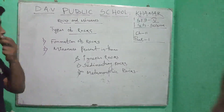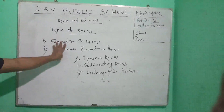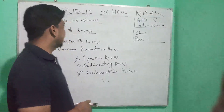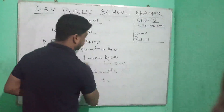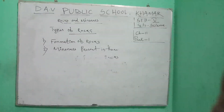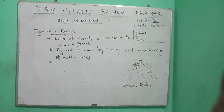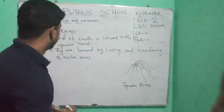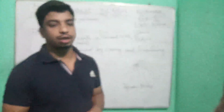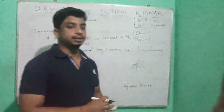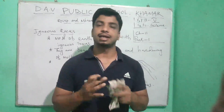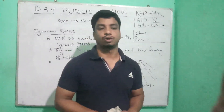Based on the formation of rocks and the minerals present in them, there are three types of rocks. Let's now learn about igneous rocks. Most of the Earth is covered with igneous rocks.